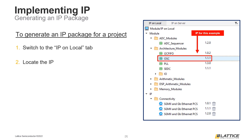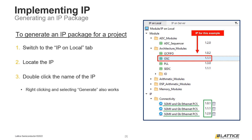One important thing to note when selecting an IP to instantiate is that the same IP package may have multiple versions. As can be seen from the figure on the right, the highlighted IP package has three different versions. Once the correct IP has been located, users can begin generating it by double-clicking its name. Users can also right-click the name of the IP package and select Generate as well.